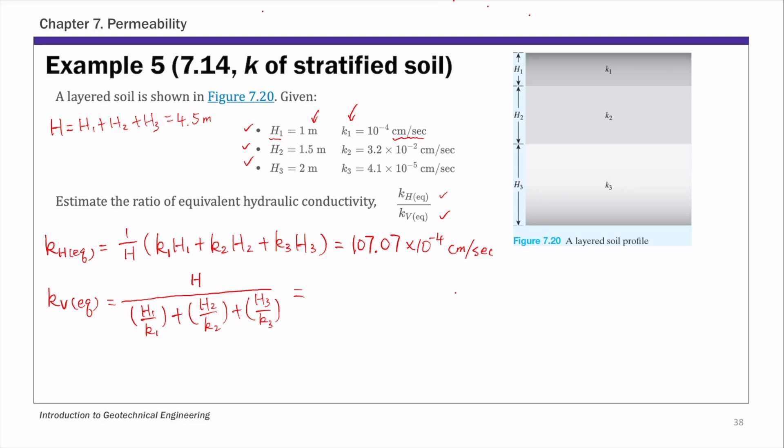Again, if you substitute all these numbers, the equivalent kv is 0.765 times 10 to negative 4, and unit is centimeter per second.